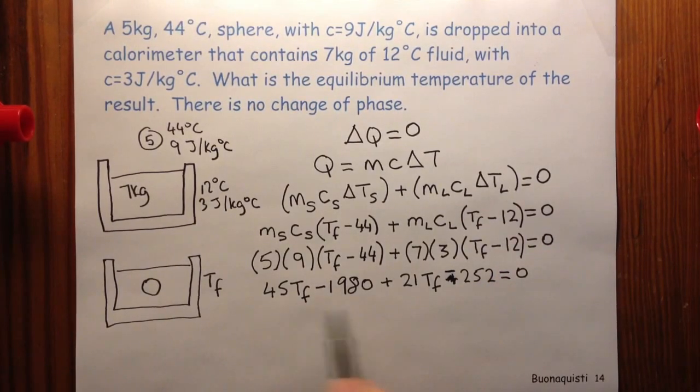So I add these together and I get 45 and 21 is 66. So I get 66 Tf.